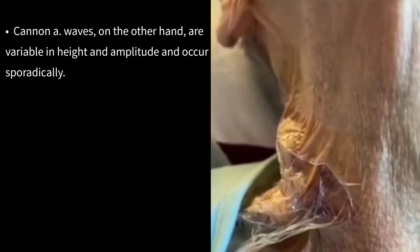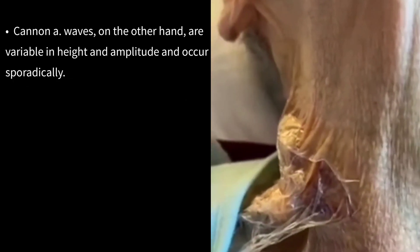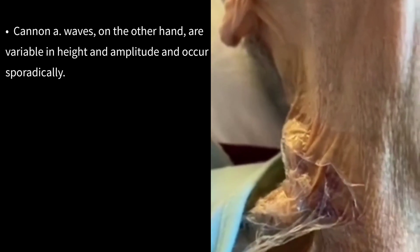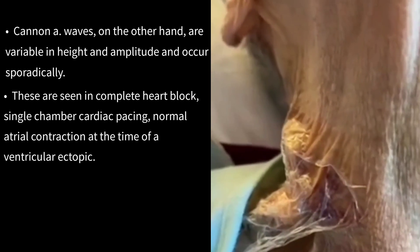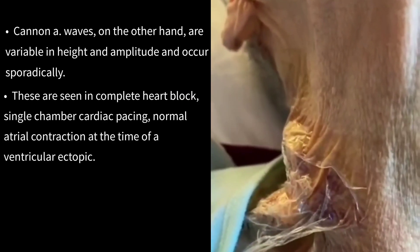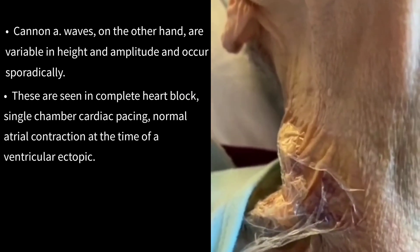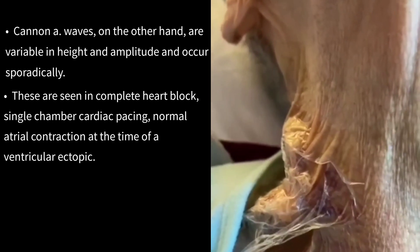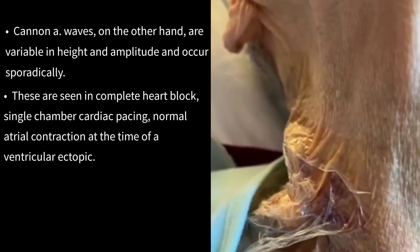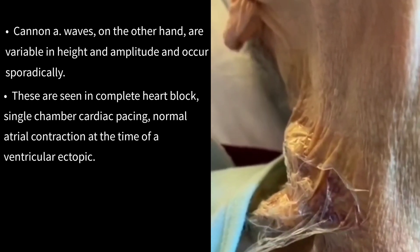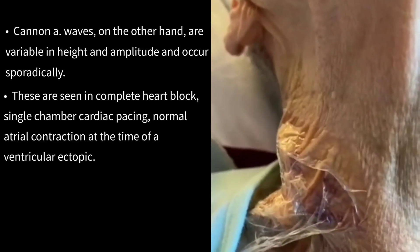Cannon A-waves, on the other hand, are variable in height and amplitude and occur sporadically. These are seen in complete heart block, single chamber cardiac pacing, and normal atrial contraction at the time of a ventricular ectopic.